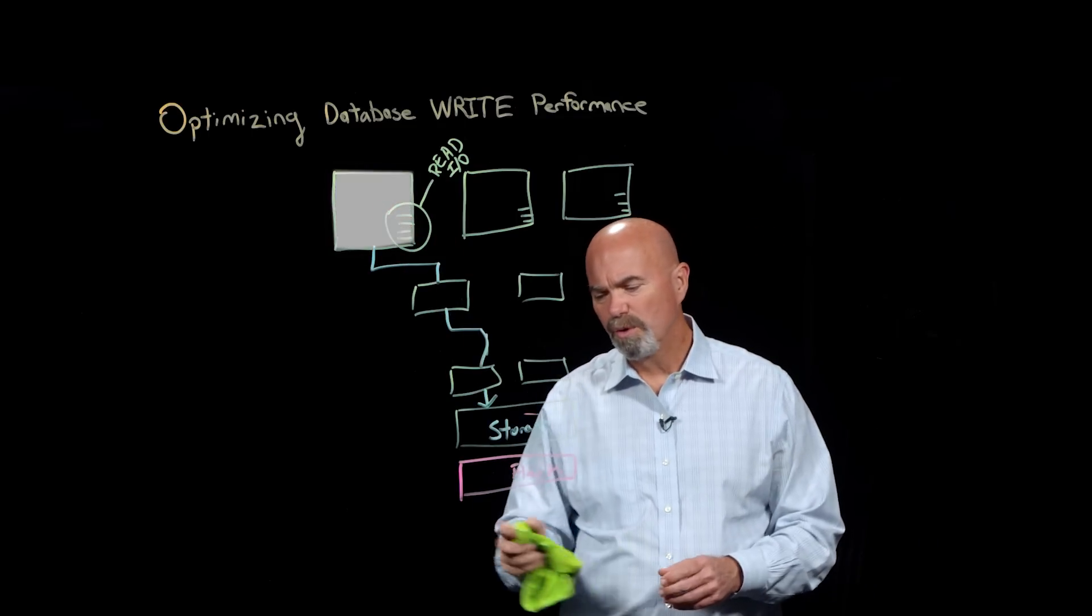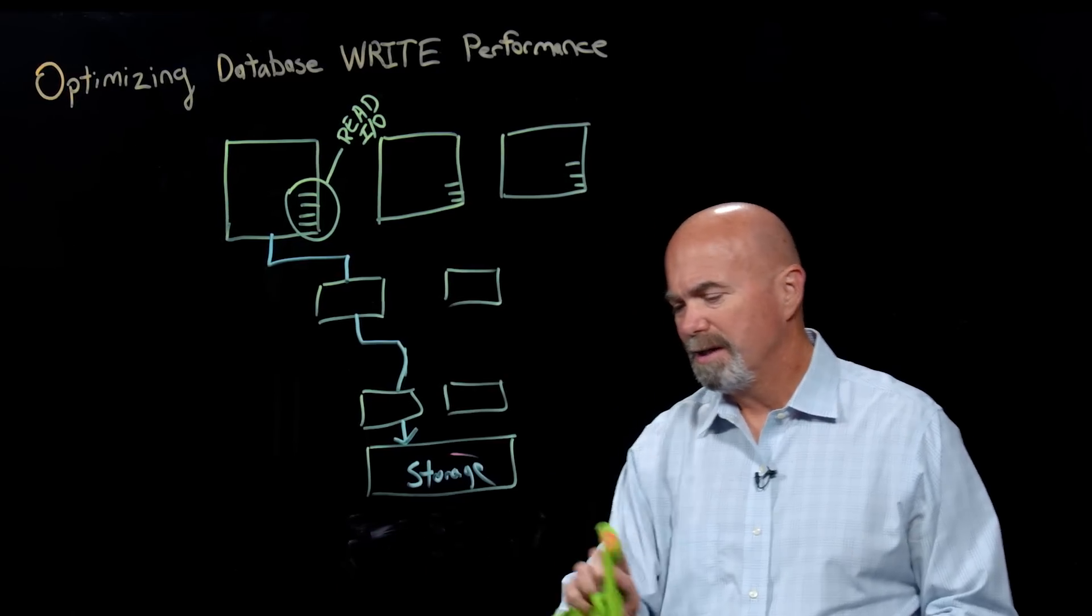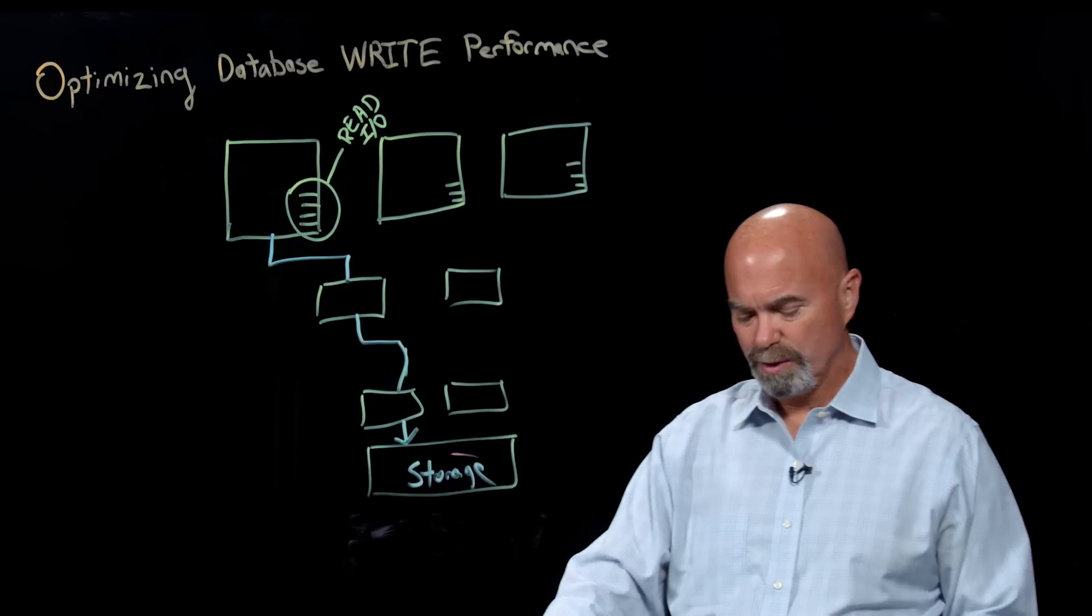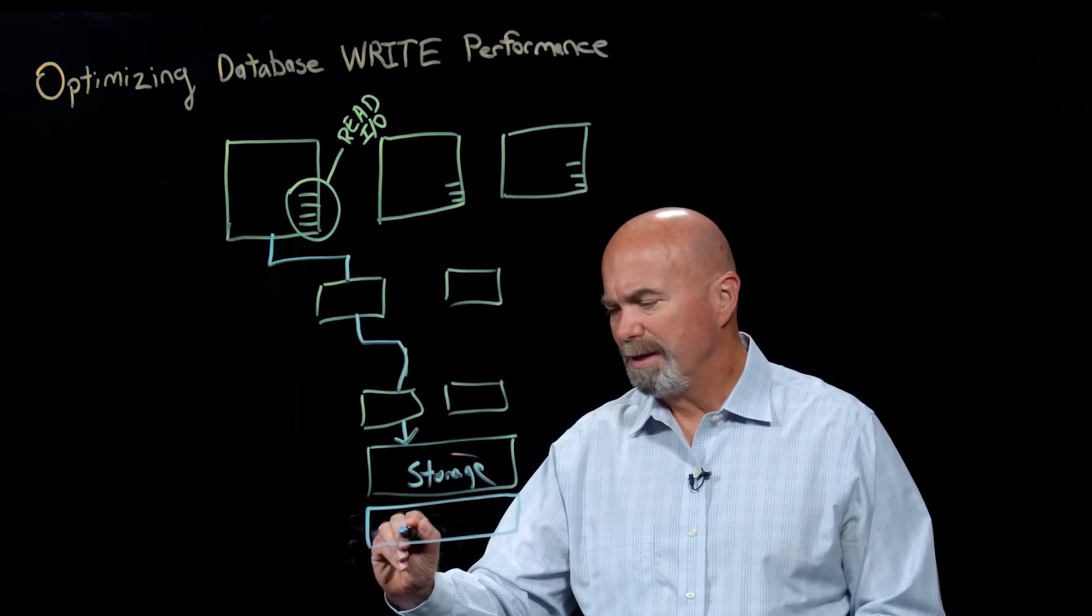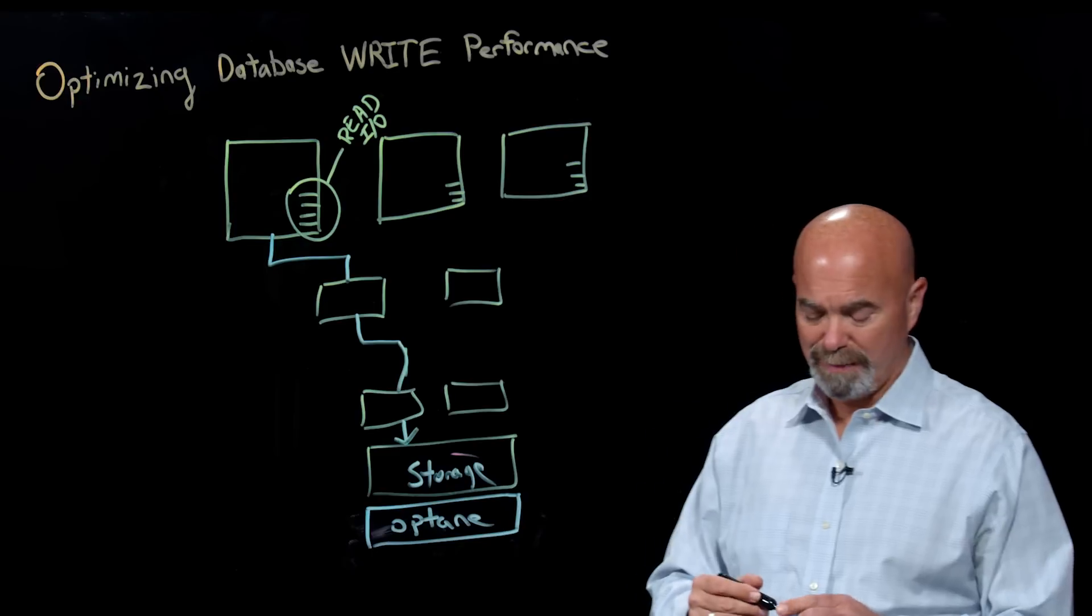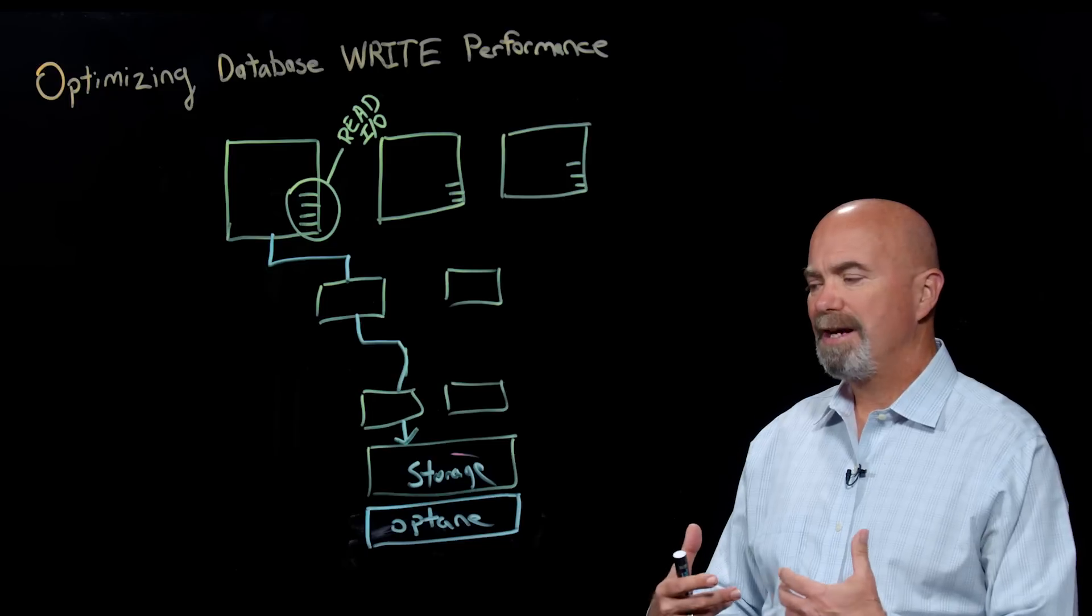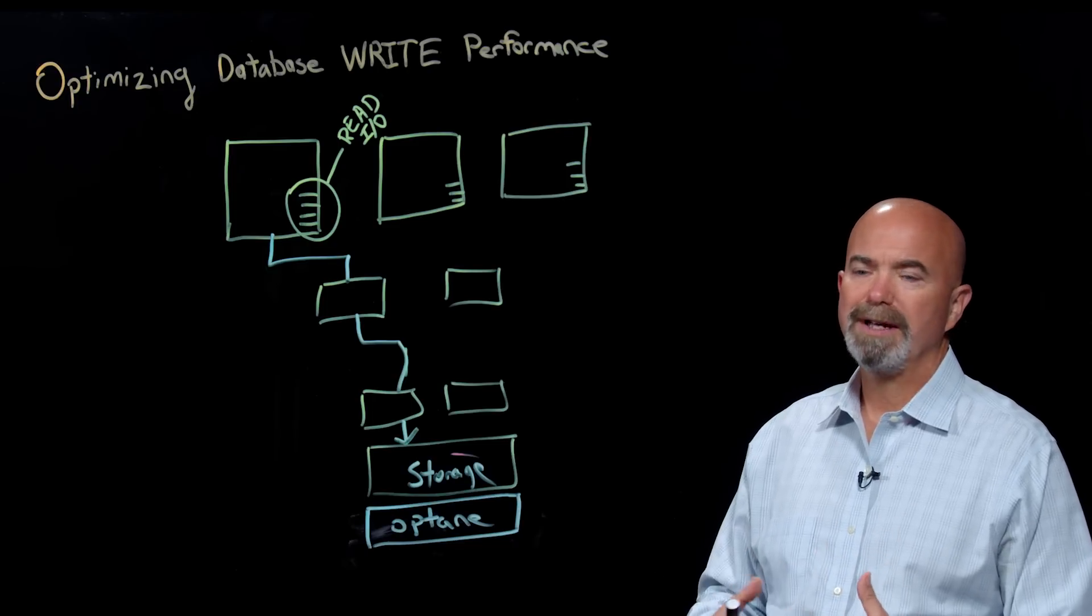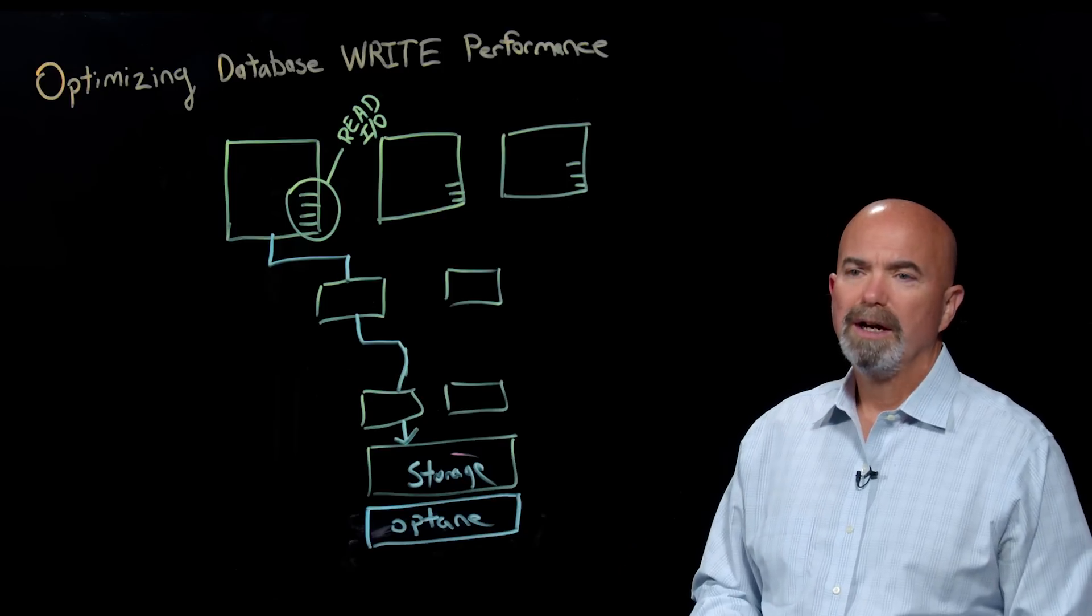Well, what we've done at StoreOne is insert into that Flash tier a tier of Optane storage. Now Optane is a class of memory that is in between Flash and RAM. It has, in fact, more in common with RAM than it does Flash. It has very high write performance at very low latencies. It, of course, also has very good read performance.